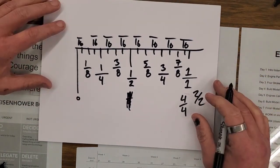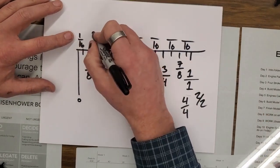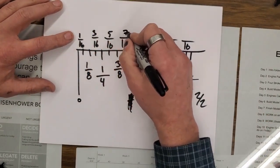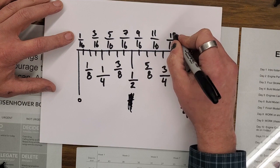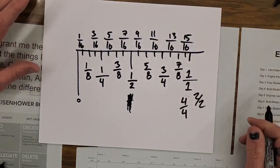And again, odd numbers starting with one, one, three, five, seven, nine, 11, 13, 15.